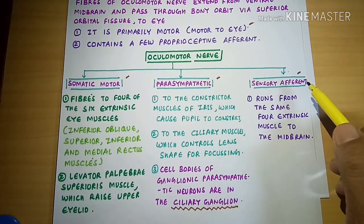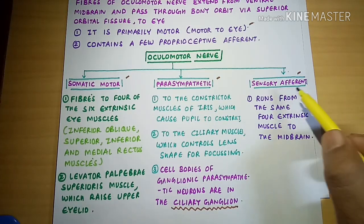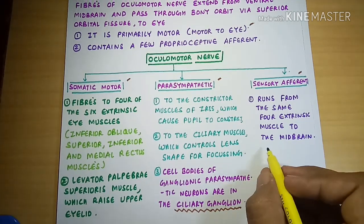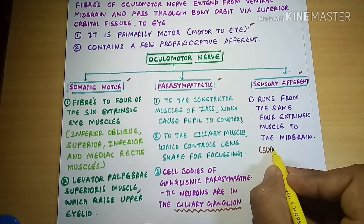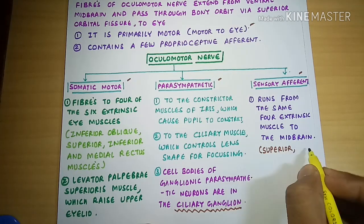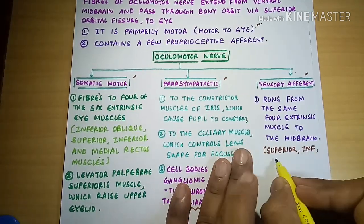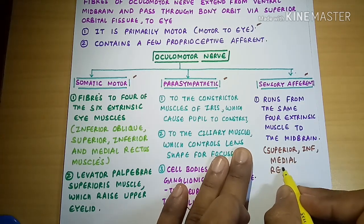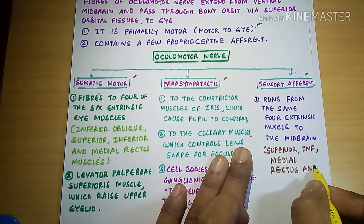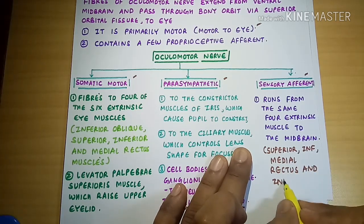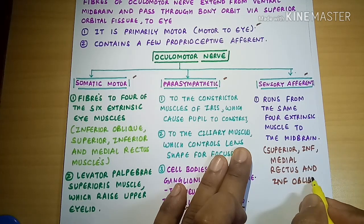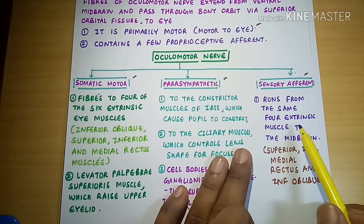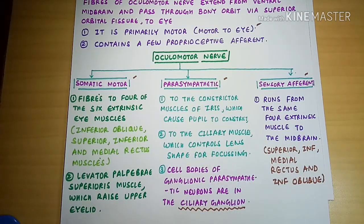The third division of the oculomotor nerve is the sensory afferent division. It runs from the same four extrinsic muscles — the superior, inferior, and medial rectus, and the inferior oblique muscles. The sensory fibers from these four muscles run back to the midbrain. These are the sensory afferent fibers of the oculomotor nerve.